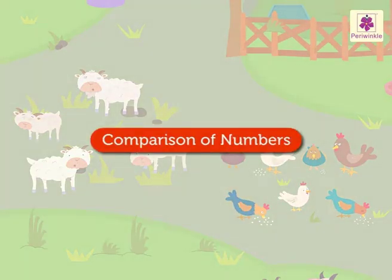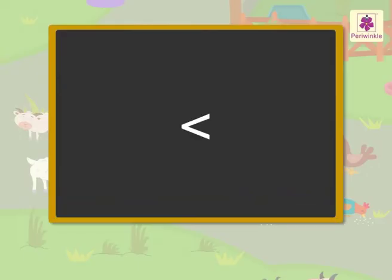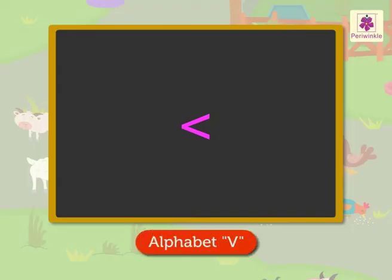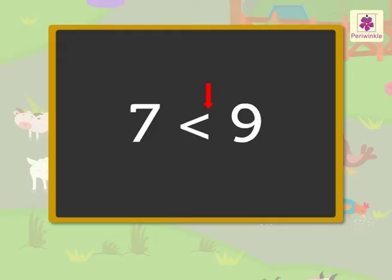Now, let us understand how to show the comparison of numbers with the help of its sign. The sign used to show greater or lesser numbers looks like the alphabet V on its side. The open side of the sign always points towards the greater number, and the closed side always points towards the smaller number.